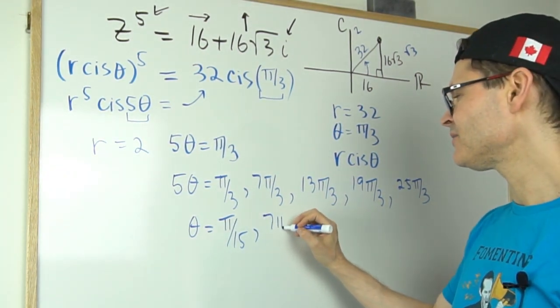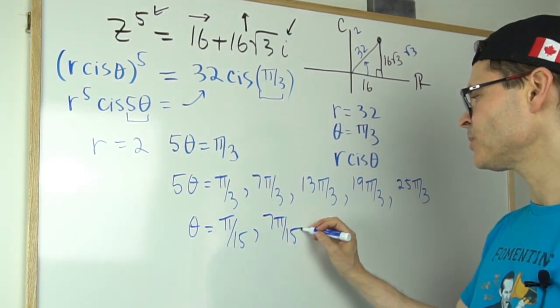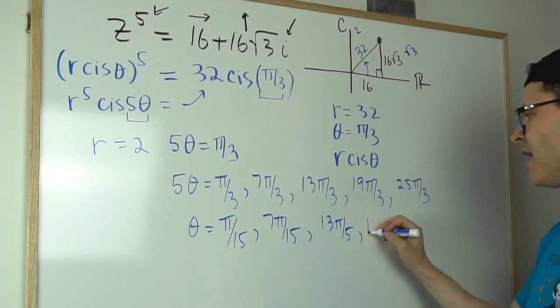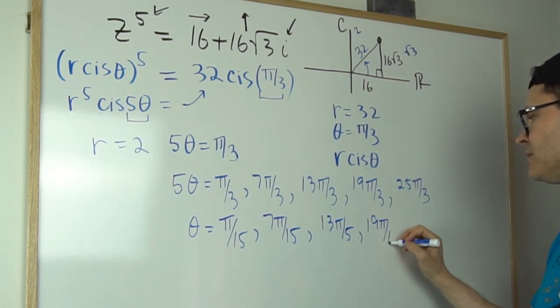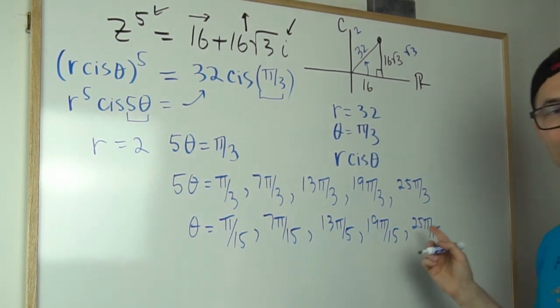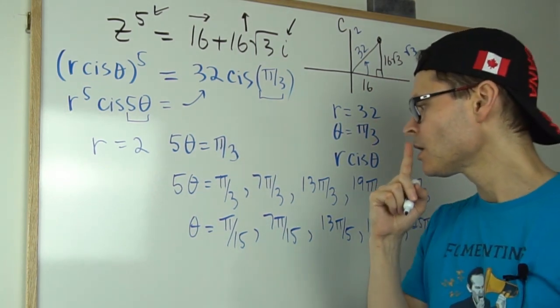And the argument for the second root is this one. I'm simply taking the denominator and multiplying it by 5, 7π over 15, 13π over 15, 19π over 15 and 25π over 15. I'll just keep them in that form.